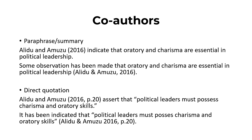Now let's look at co-authors. When you want to cite and the authors are two, how do you cite them? You mention the last names of the two authors. For example, Alidu and Amuzu, 2016, indicate that oratory and charisma are essential in political leadership — that is using the narrative. If you want to cite in the parenthetical reference, you say: 'Some observations have been made that oratory and charisma are essential in political leadership,' then in brackets, Alidu and Amuzu.